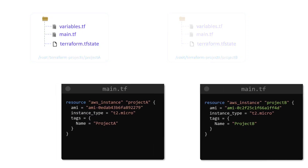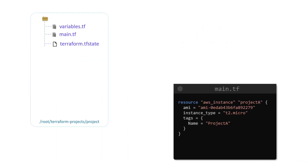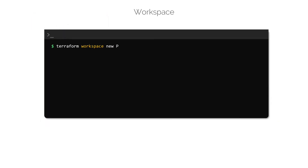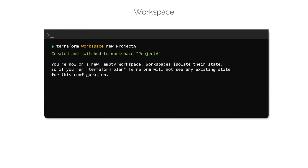With that in mind, Terraform offers a feature that allows configuration files within a directory to be reused multiple times for different use cases — such as creating a Project A and a Project B environment within the same configuration directory. This feature is called Workspace. With Workspaces, we can use the same configuration directory to create multiple infrastructure environments. To create a workspace, we use the terraform workspace command followed by the new subcommand and the name of the workspace.